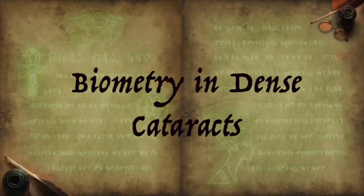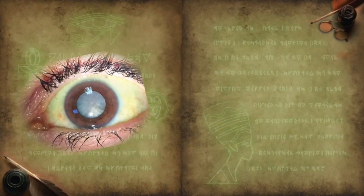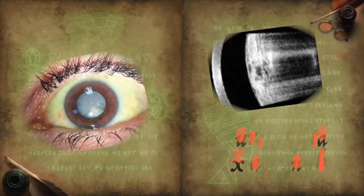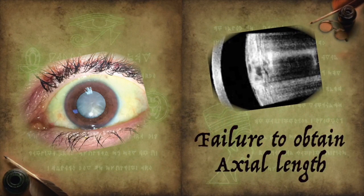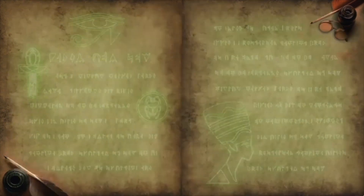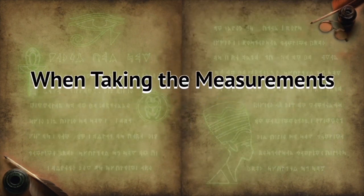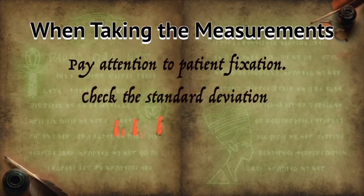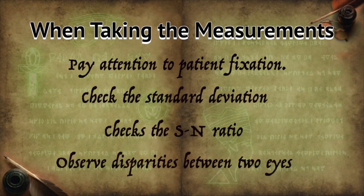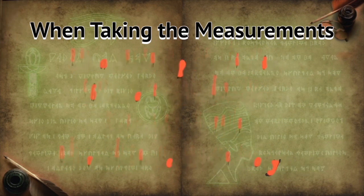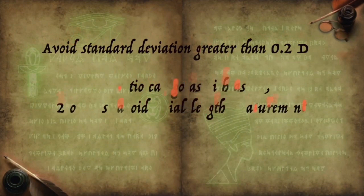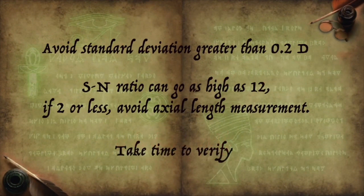Biometry in dense cataract is another tricky situation. In dense cataracts, we fail to obtain the axial length using conventional devices. This is when we have to go back to ultrasound and choose the dense cataract mode in LENSTAR or the new IOL Master 700. The commandments here are to check the standard deviation and the signal-to-noise ratio between both eyes. Standard deviation more than 0.2 diopters should be avoided, and avoid a signal-to-noise ratio less than 2.